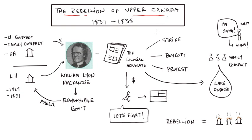The rebellion of Upper Canada happens in 1837 to 1838, but how do we get there? As we saw in our previous video, there are some conflicts between the upper house and the lower house.